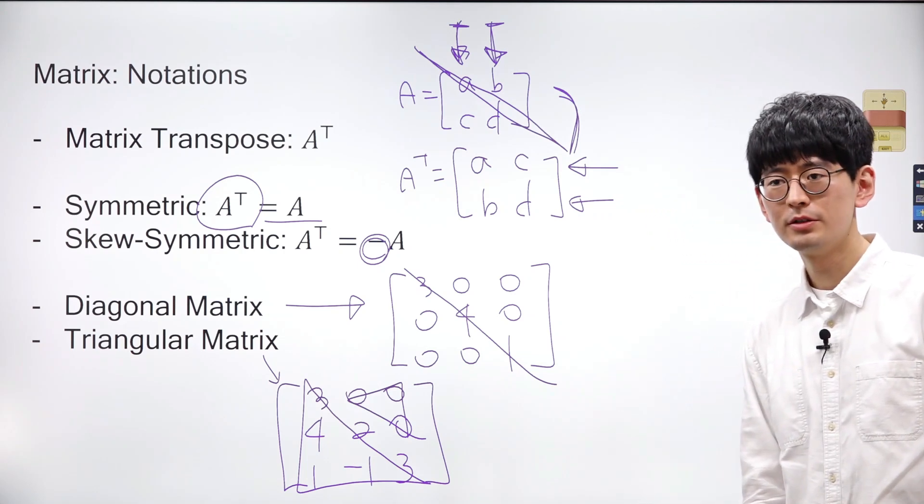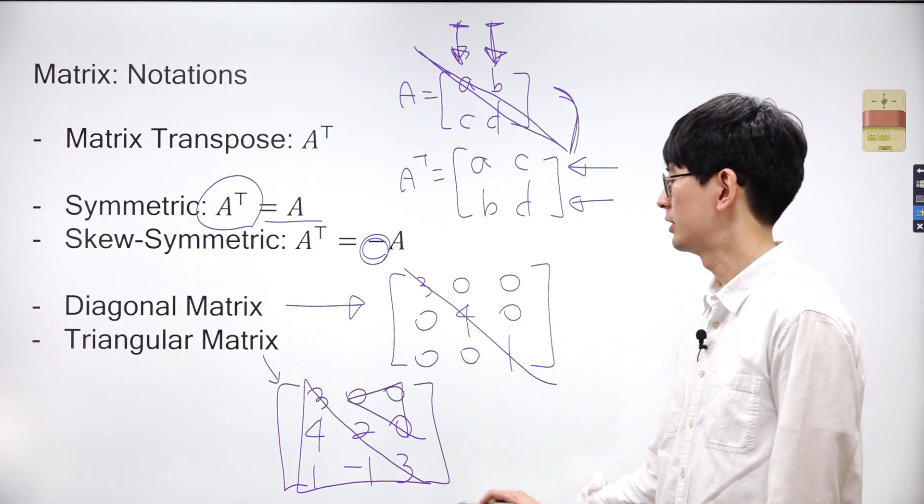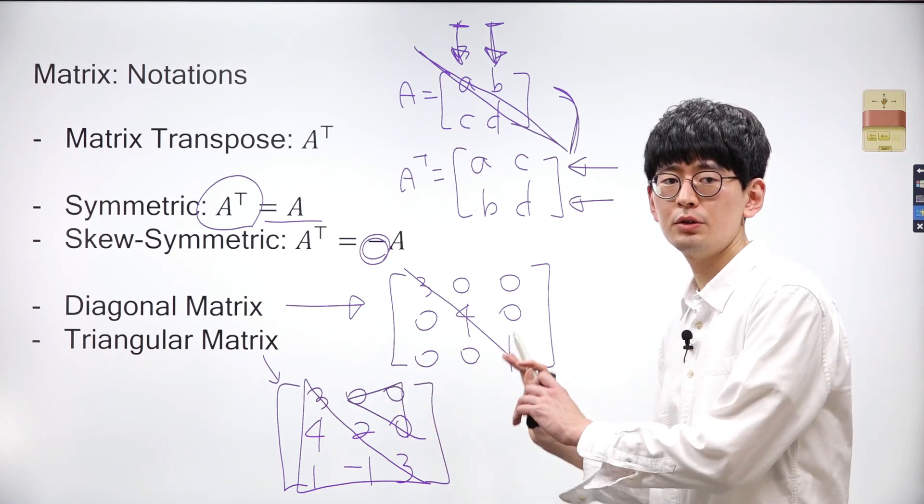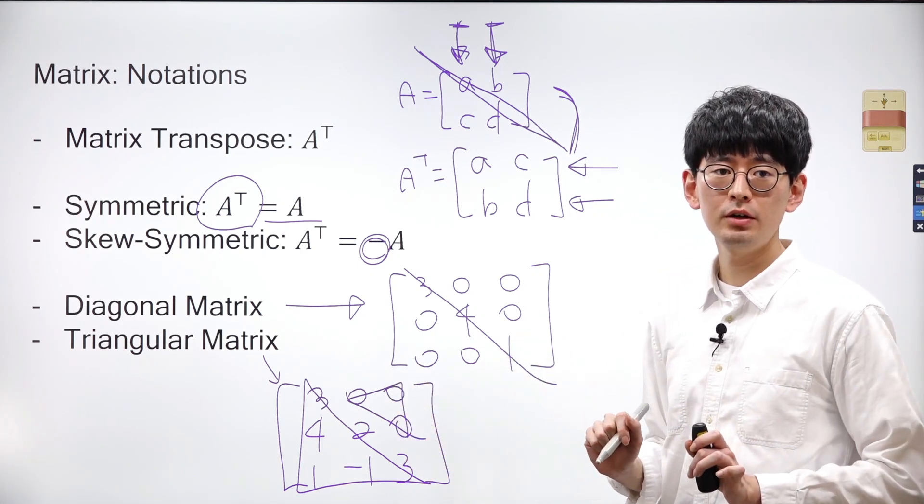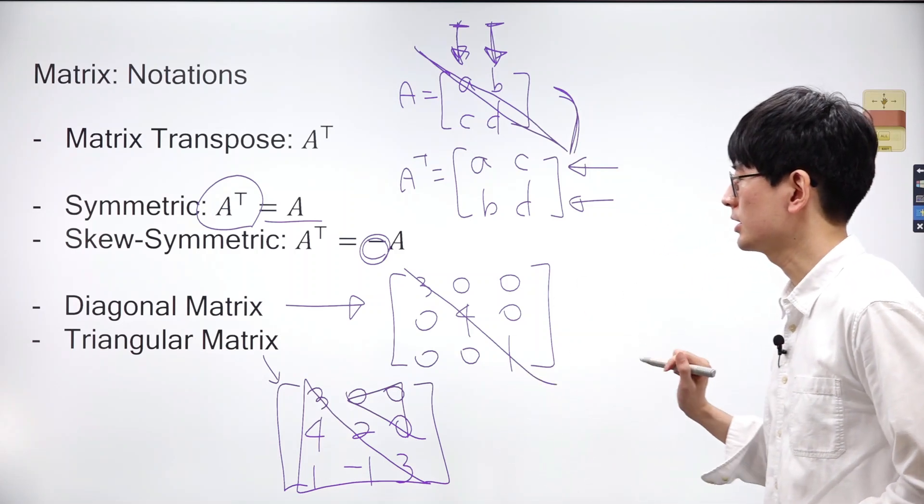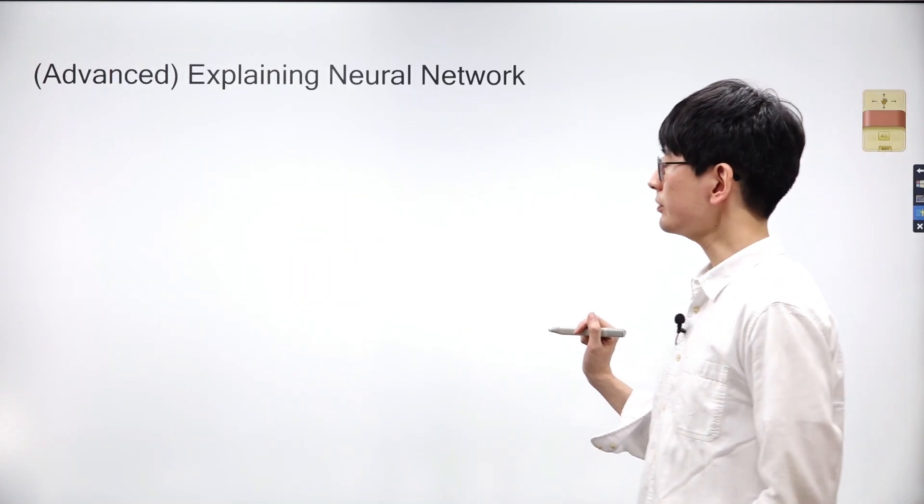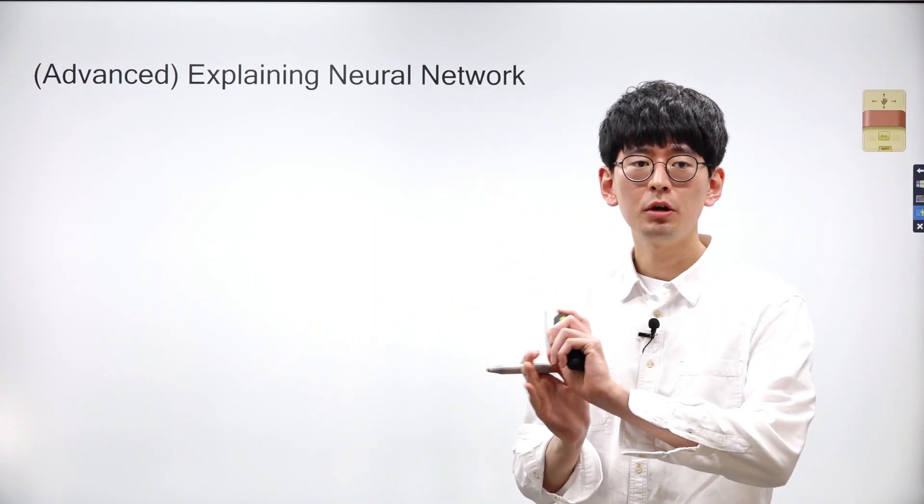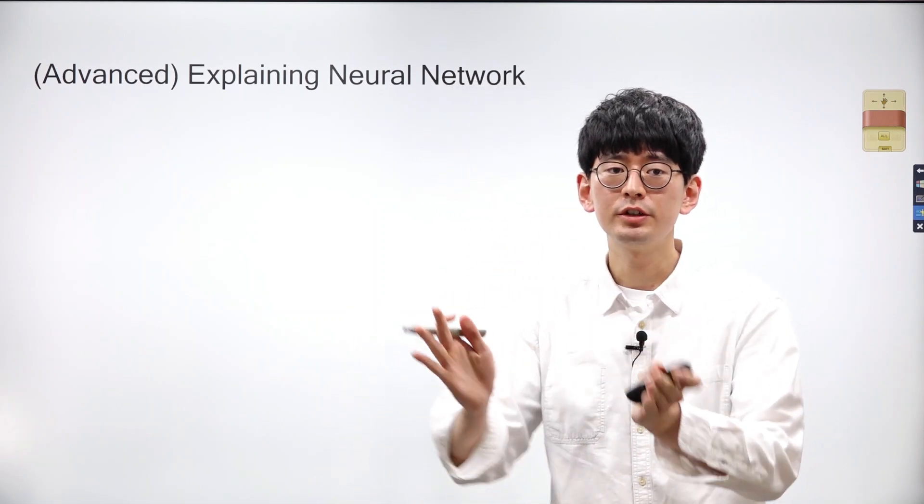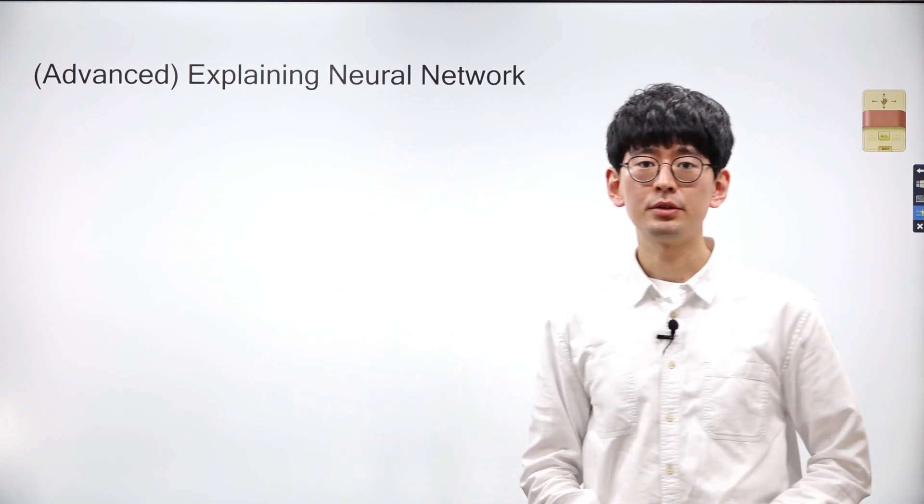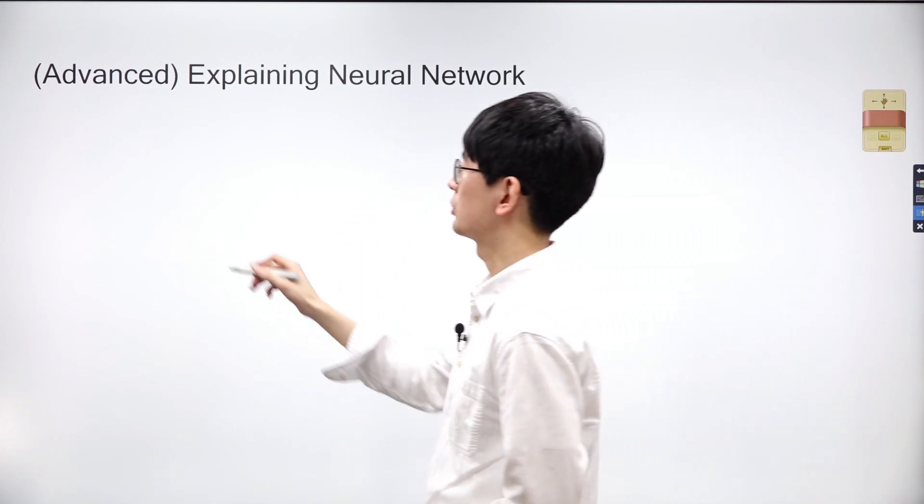A triangular matrix is a special type of square matrix where all the entries above or below the main diagonal are 0. Depending on whether the non-zero entries are above or below the main diagonal, we classify triangular matrices into two types: upper triangular matrices and lower triangular matrices. So far, we've learned that the multiplication between a matrix and a vector results in a transformation of a coordinate space, and we'll apply this concept to understand the fundamental principles of neural networks.